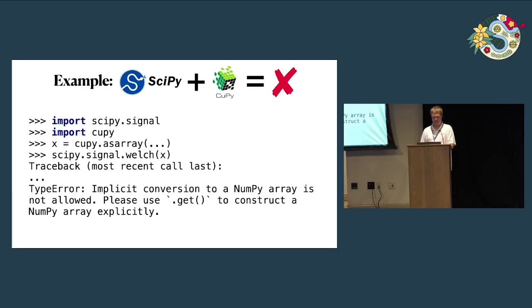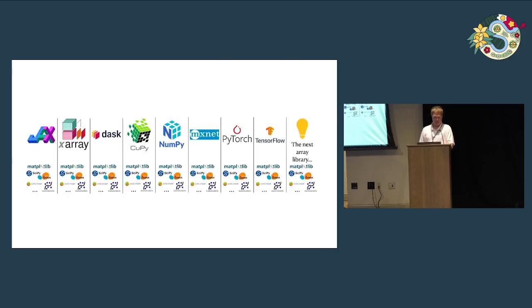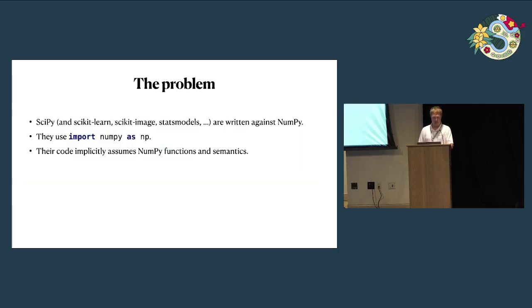If you try to pass a CuPy array to SciPy — and keep in mind that CuPy is about as close as you can get to NumPy without actually being NumPy — you get this error. So ideally we would like to be able to use matplotlib and SciPy and scikit-learn with CuPy or with PyTorch. The problem is that SciPy and all these other tools are using import NumPy, and their code is all coded against NumPy, assuming NumPy functions.